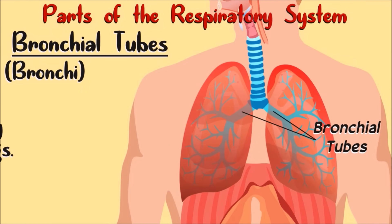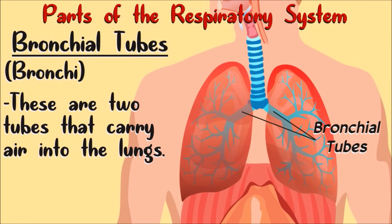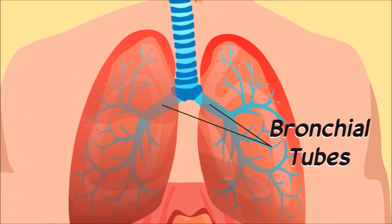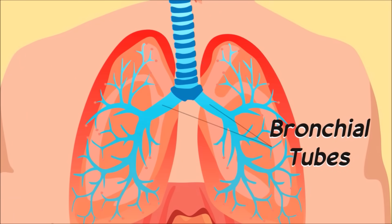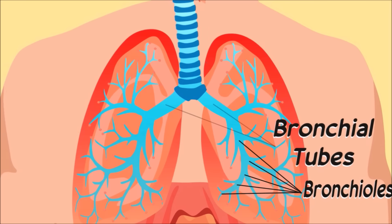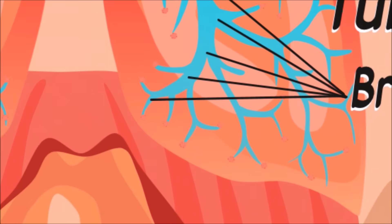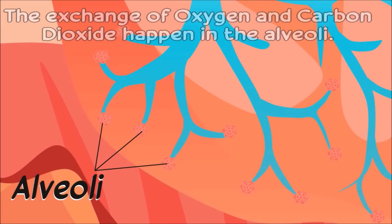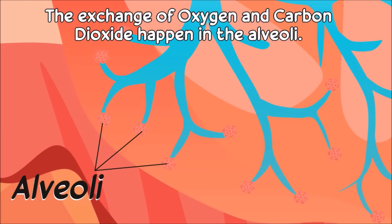These are the bronchial tubes — two tubes that carry air into the lungs. The bronchial tubes branch into even smaller tubes called bronchioles. At the end of each bronchiole is a bunch of tiny air sacs called alveoli. The exchange of oxygen and carbon dioxide happens in the alveoli.